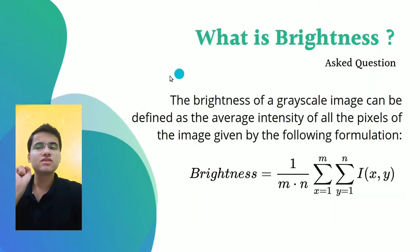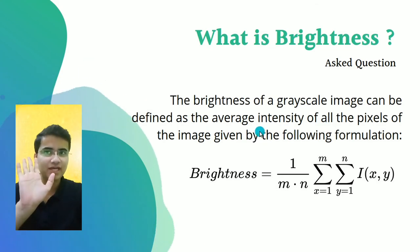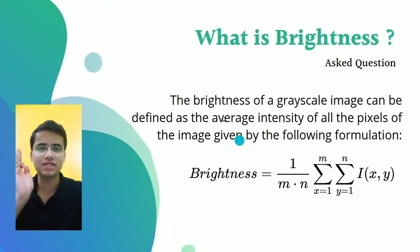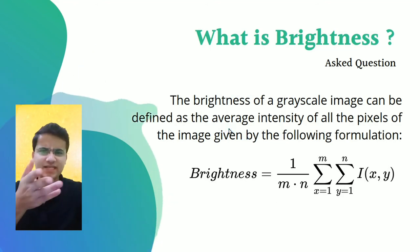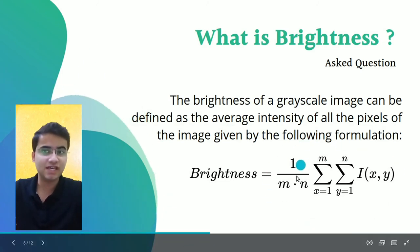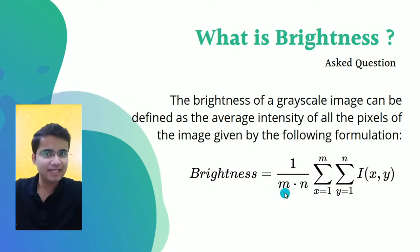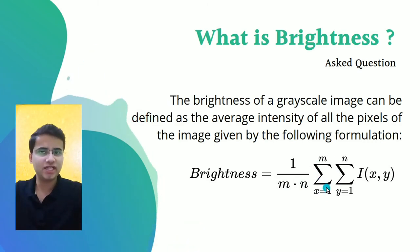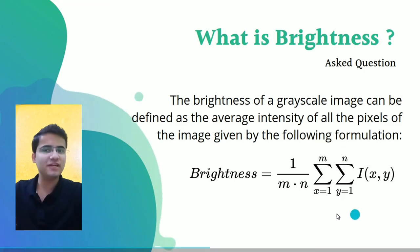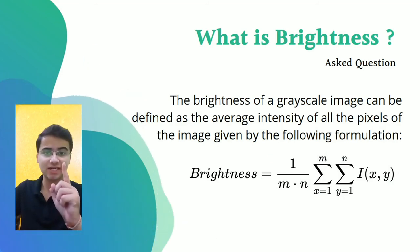The brightness of a grayscale image is defined as the average intensity of all the pixels contained in the image. Mathematically, we calculate the average: 1/(m×n), where m is the number of columns and n is the number of rows. We use summation — x from 1 to m, y from 1 to n — summing all intensity values and then dividing by the total. That's all. Brightness is the average intensity of all pixels in the image.